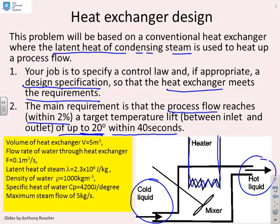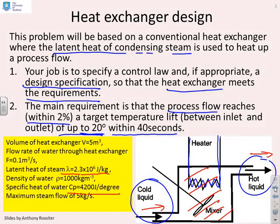Some data we're given: the volume of the heat exchanger is five meters cubed. The flow rate of water through the heat exchanger is 0.1 meters cubed per second. The latent heat of steam λ = 2.3 × 10^6 joules per kilogram. The density of water ρ ≈ 1000 kilograms per meter cubed. Specific heat of water Cp = 4200 joules per degree. And critically, a maximum steam flow of five kilograms per second. So we've been given core data and a requirement, and the question is how do I meet this requirement?